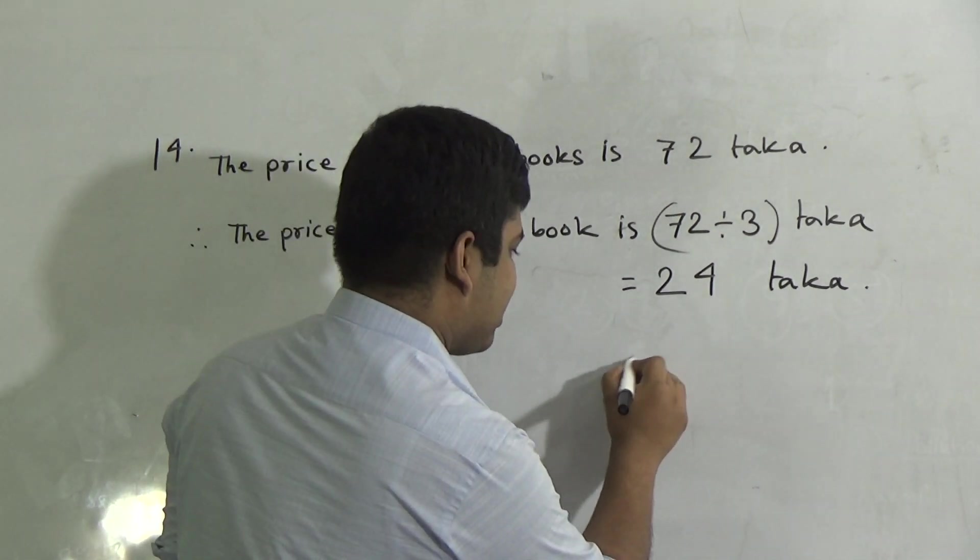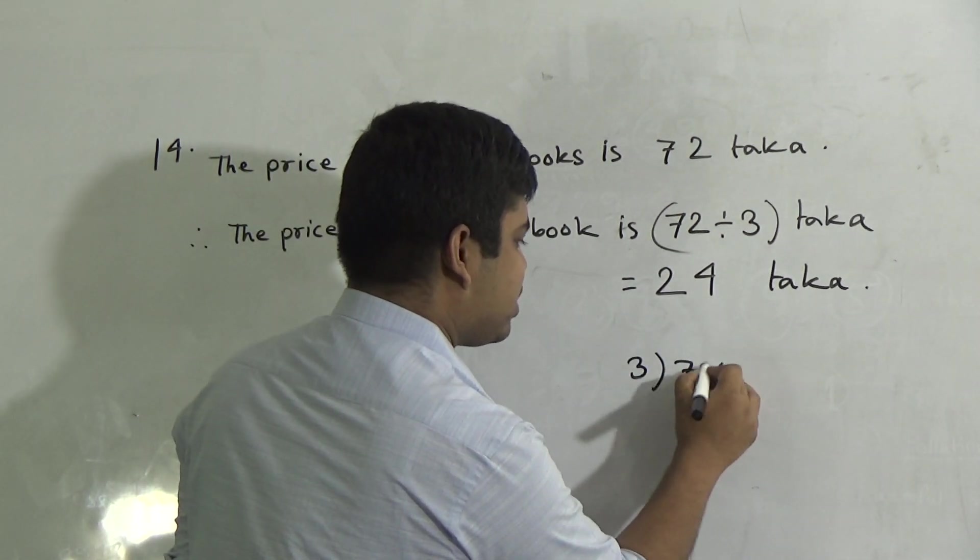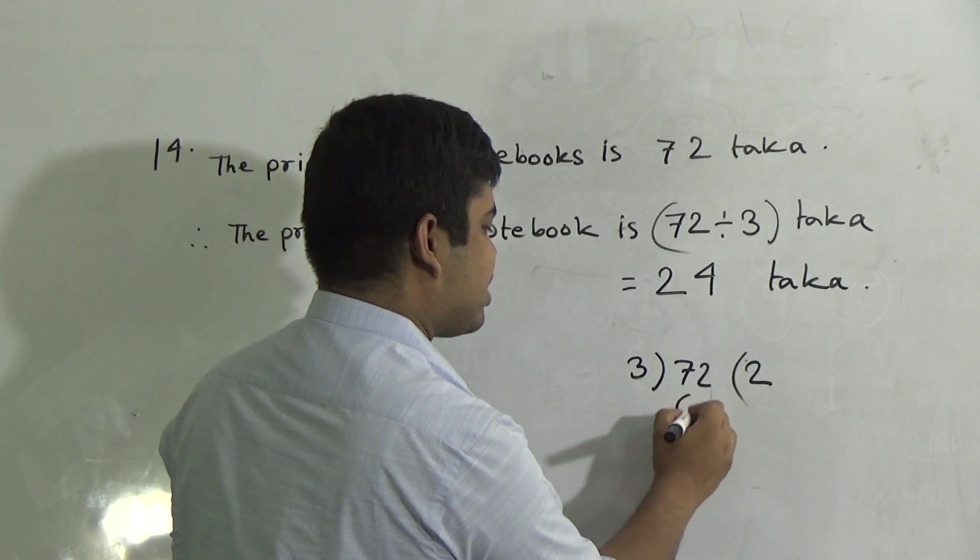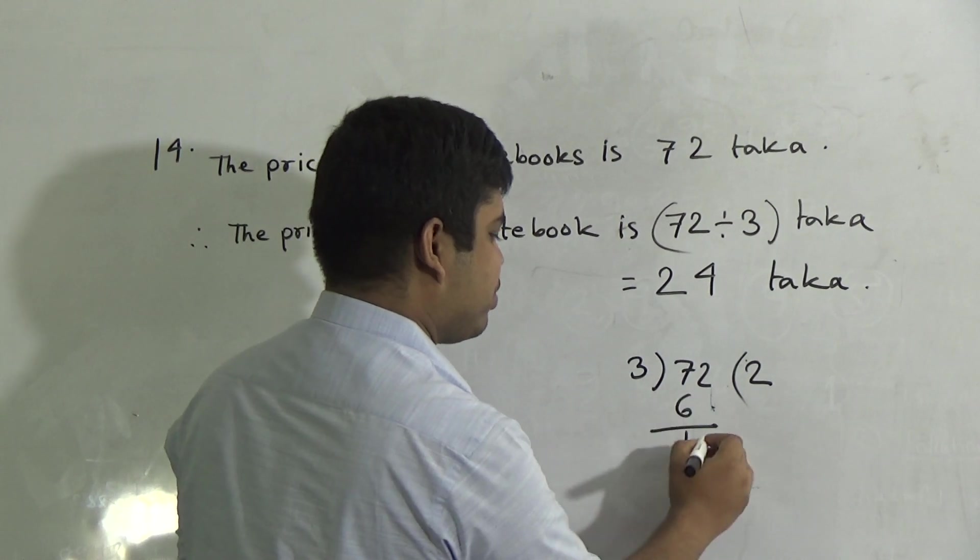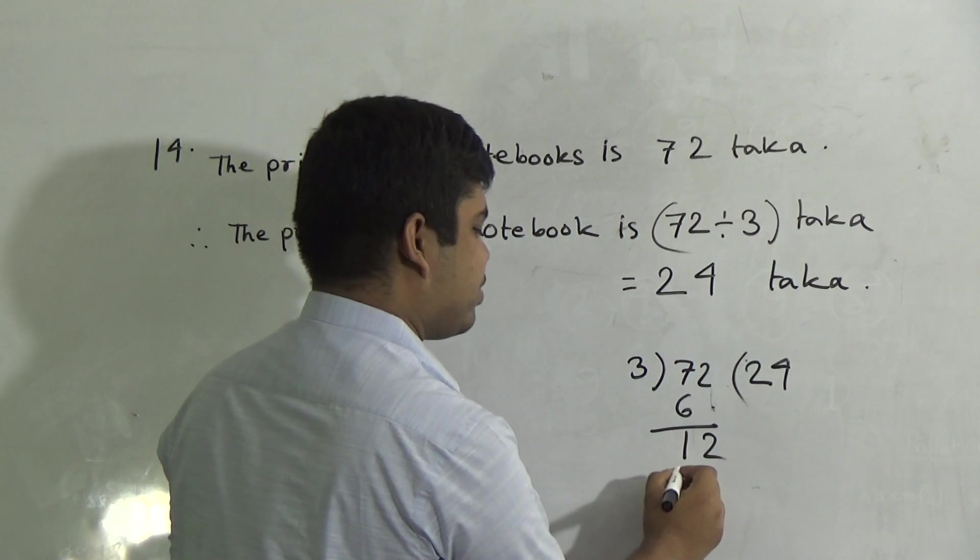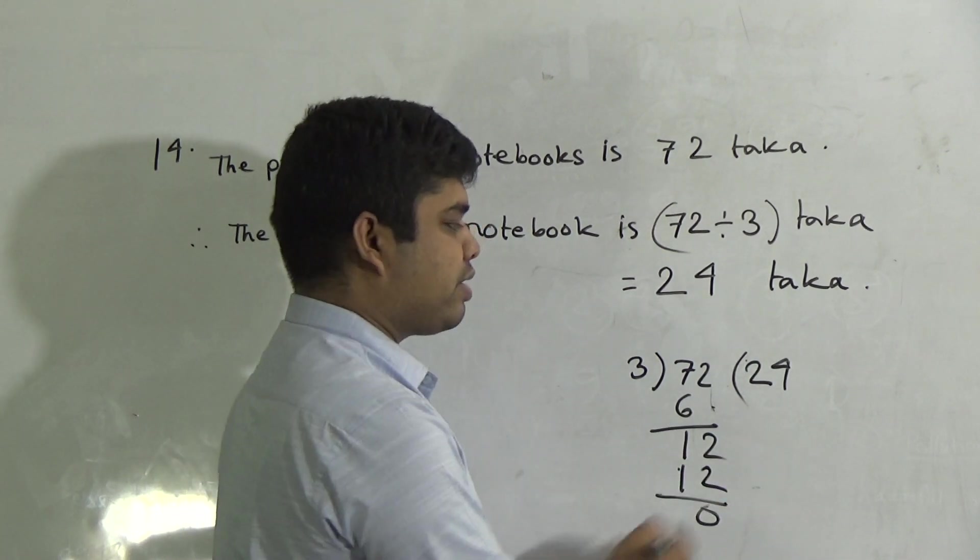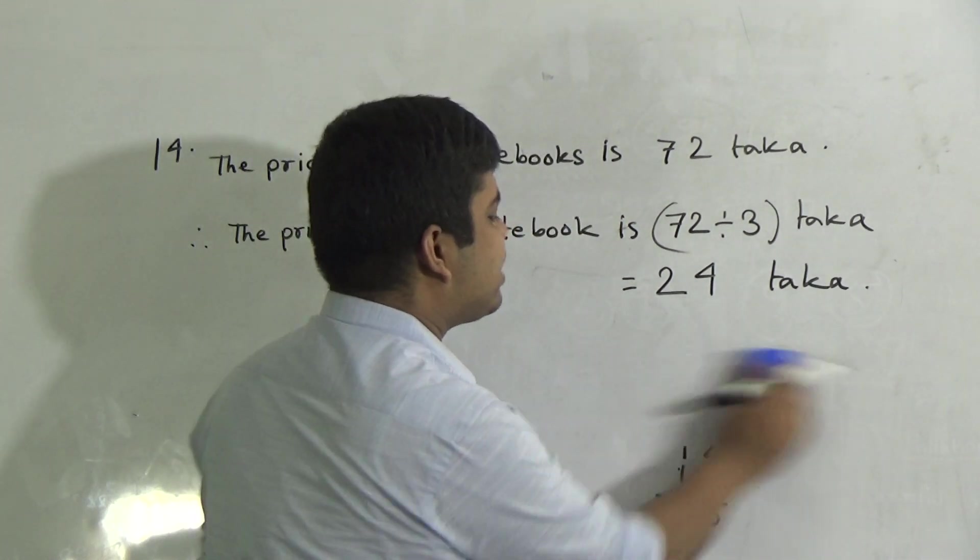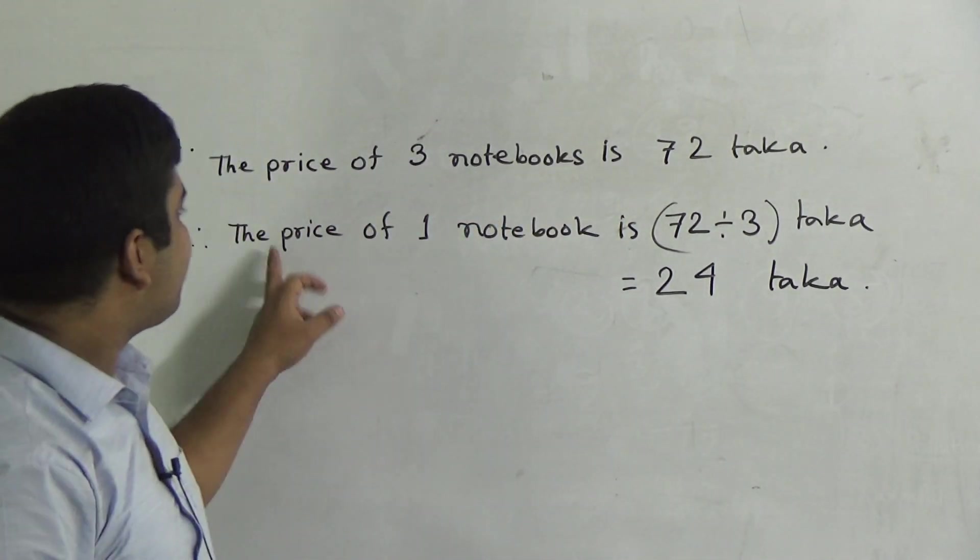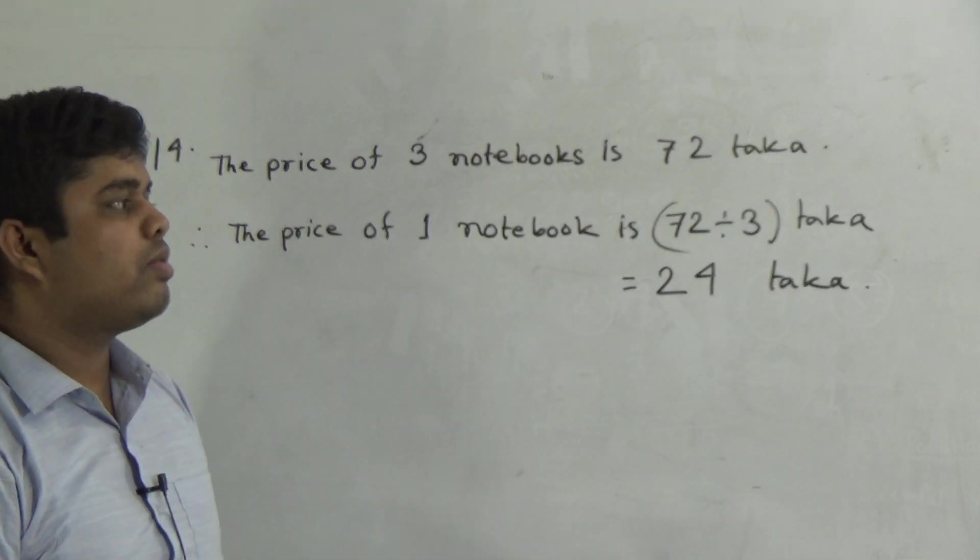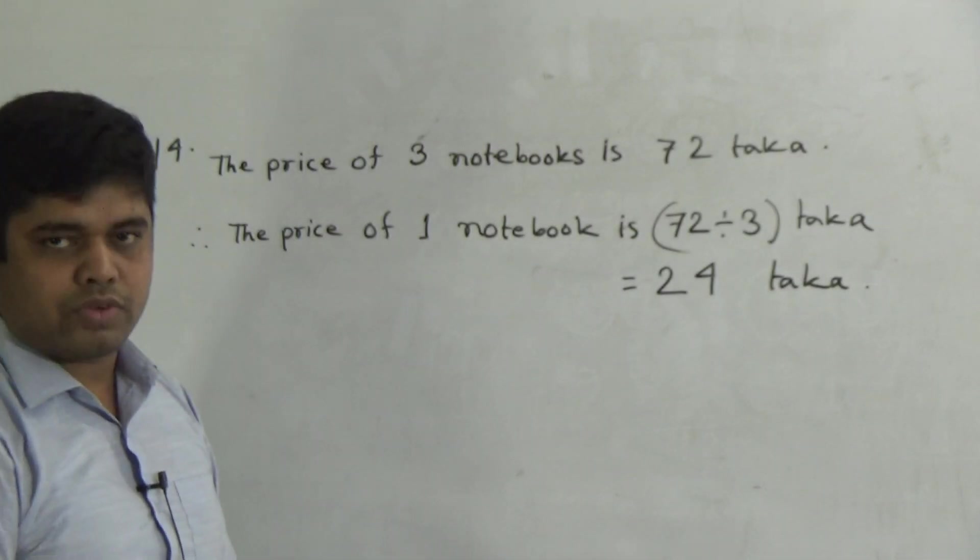My dear students who can do this division orally, please notice 3 divided by 72. So in 7, 3 goes in 2 times, 3 twos are 6. Then subtract and we get 1. This 2 is placed here. Now 12. In 12, 3 goes in 4 times. 3 fours are 12. I hope you have understood. So we get 24. My dear students, we have already found the price of one notebook. Now, by using this information, we find out the price of 12 notebooks.